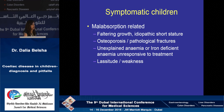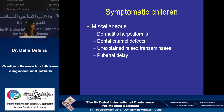Malabsorption-related indications include any child with short stature — you need to check celiac serology — as well as children with osteoporosis, fractures, unexplained iron deficiency anemia, weakness, and tiredness. For miscellaneous other causes, one I really like to focus on is unexplained raised transaminitis. If you have raised liver enzymes, please don't forget to check for celiac serology. Delayed puberty has also been documented in children with celiac disease.